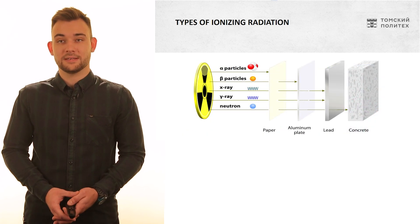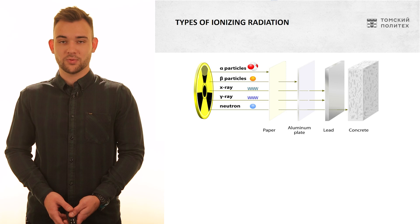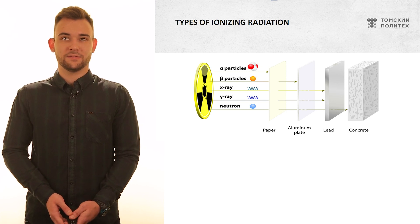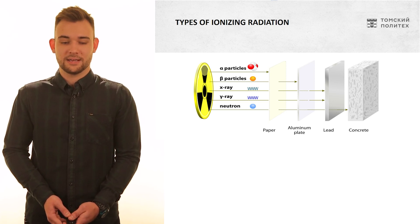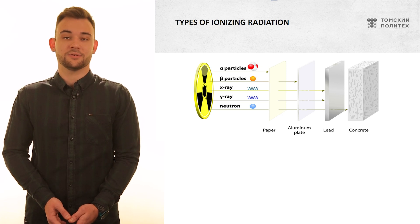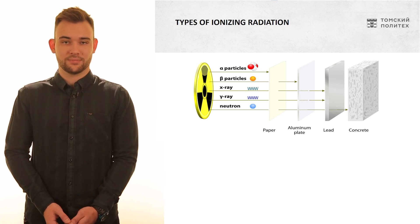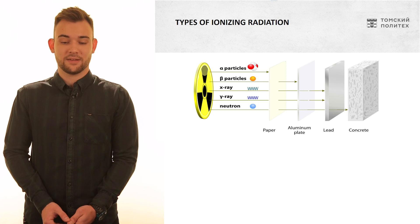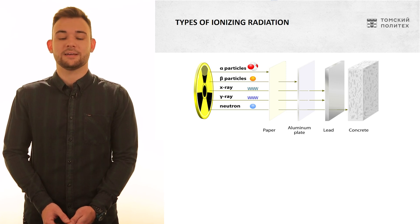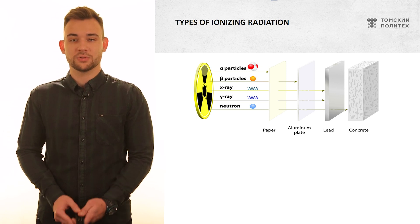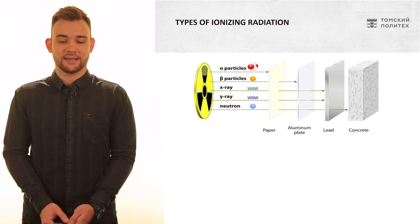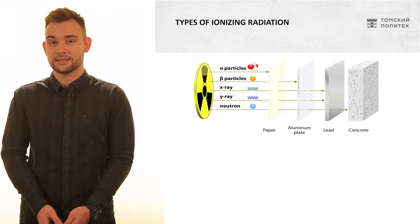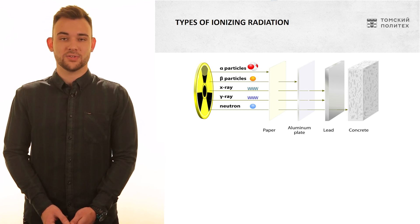On the next slide you could see information you might know from school: the different types of radiation and their penetration ability. You are safe enough shielding yourself with a piece of paper against alpha particles. You need something heavier like aluminum plates against beta particles, and much heavier materials like lead against X-rays and gamma rays. For neutrons, you will need more complicated materials like concrete or lead combined, depending on the energies of the neutrons.